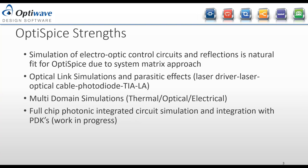One of OptiSpice's strengths is simulating electro-optic control circuits. For example, if you want to do a thermal simulation of a ring resonator — where you control the temperature, change the refractive index, and keep it on and off resonance — you can do that with OptiSpice. You can also do optical link simulations with parasitic effects, where you have an electrical circuit driving a laser. We have a nonlinear model for the laser, so you can model nonlinear effects. Then you send your optical signal through an optical cable, and on the other side you have the receiver with a photodiode, trans-impedance amplifier, and limiting amp.